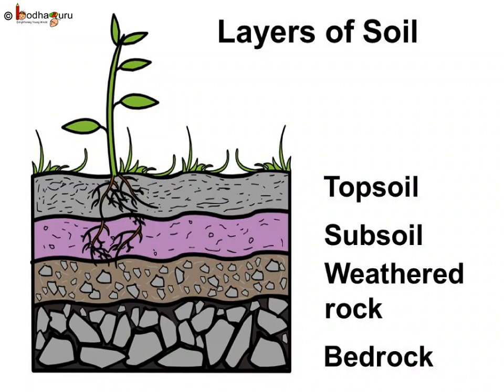Soil forms the top layer of Earth. The soil itself is not the same throughout — it also has a layered structure. The topmost layer of the soil is called the topsoil. It is very fertile and plants grow in it. Below the topsoil is the subsoil. It is hard with mostly small rocks. Below it is weathered rock fragments where there is little or no plant or animal life. The bottommost layer is the bedrock, which is the starting stage of the Earth millions of years ago. It has only big rocks.